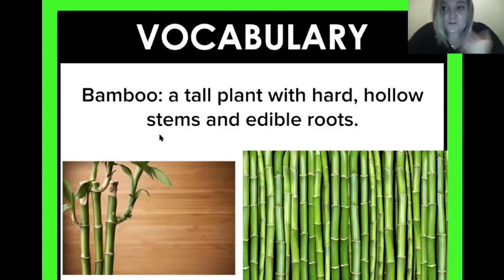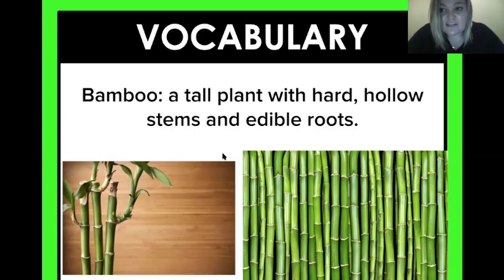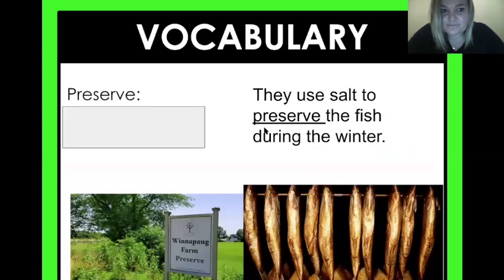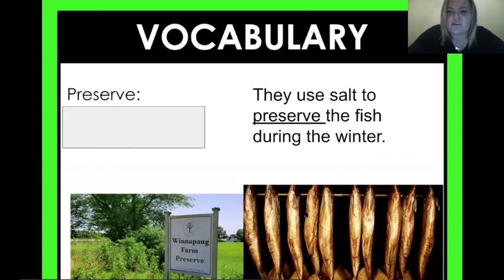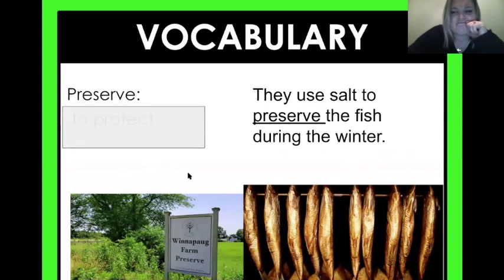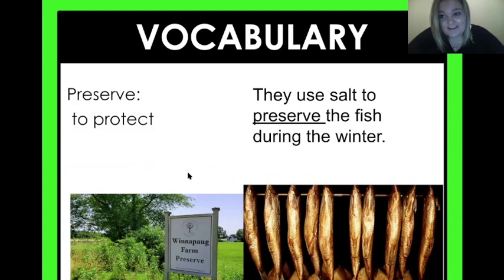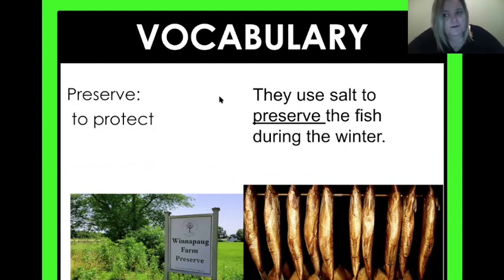Our next word is bamboo, which is a tall plant — it's hard, but it's hollow, which means there's not anything on the inside, and it has edible roots. Now this vocabulary word: they use salt to preserve fish during the winter. Right here they're preserving this fish and they have salt on it, and here is a preservation where they preserve land. What could 'preserve' mean? If you said it was to protect, you're right — they have to protect that fish so they can eat it in the winter when there's not a lot of fish swimming around.